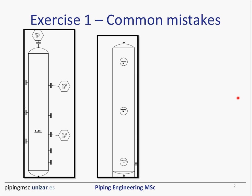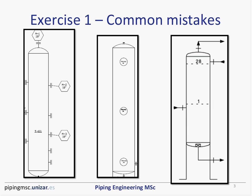The first mistake concerns equipment internals. We can see the representation of two towers or columns, and I would like to know if anyone can tell me what they think is missing in these two representations. You have to remember to represent vessel internals like trays — for towers or columns, trays are very important.